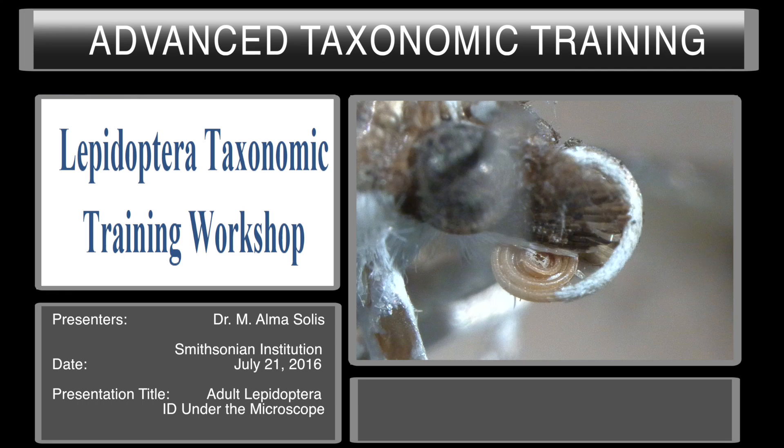If they have scales on the base of the proboscis, they can be either a Pyraloidea moth or a Gelechioidea moth. The next step is to look at the abdomen to see if they have tympanol organs or not.